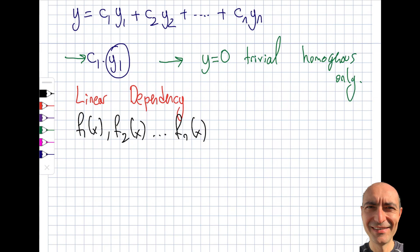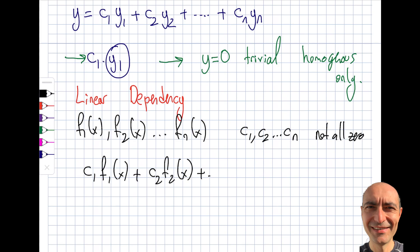Let's also say that I have these constants given to me, all the way to cn — and they are not all zero. You'll see in a minute why all zero is no good. So if c1·f1(x) + c2·f2(x) summed all the way to cn·fn(x) equals zero, this is called linearly dependent.